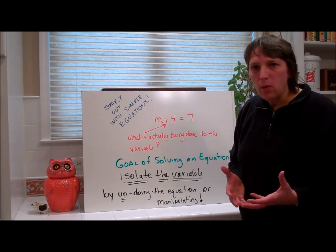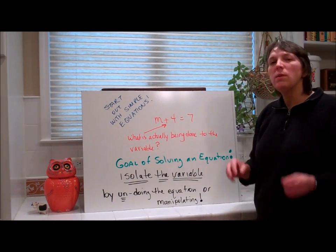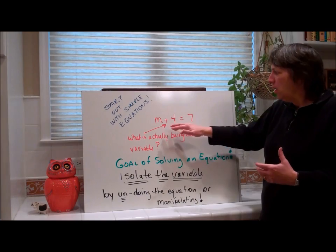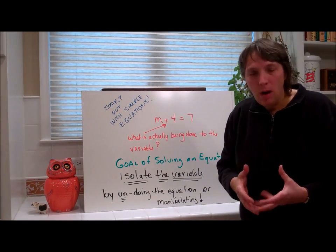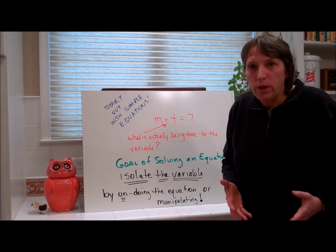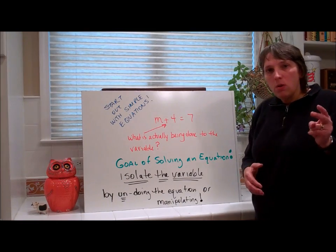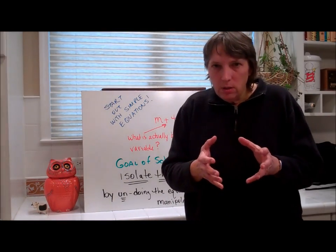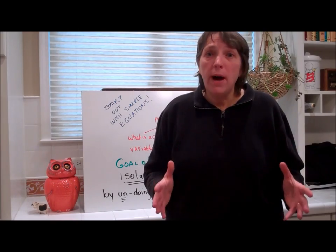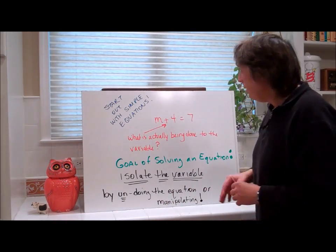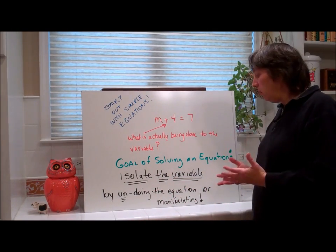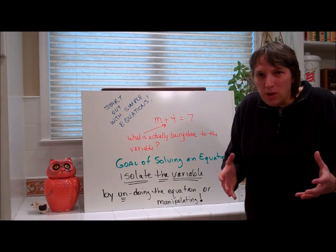We're going to stay with m plus 4. When we do these to solve an equation, we have to find out what is actually being done to the variable. You have to ask yourself, what is being done to this variable? Well, I'm adding 4. So, what's my goal when I solve an equation? My goal is to isolate the variable. What does the word isolate mean? Get it all by itself. All alone. Well, we do that by undoing what's being done to the variable. And we manipulate the equation. We can fool around with this equation as long as we stay consistent.